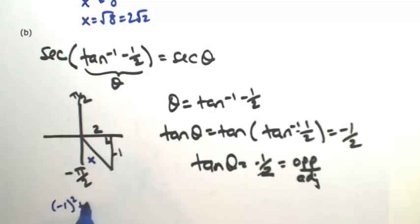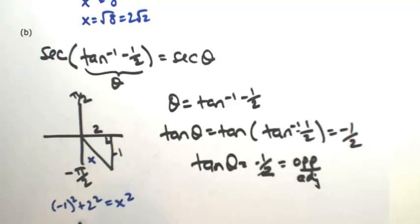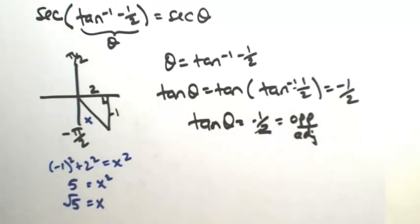Okay, so negative 1 squared plus 2 squared is x squared. So x squared is 5, so x is going to be positive square root of 5, because this is the hypotenuse.